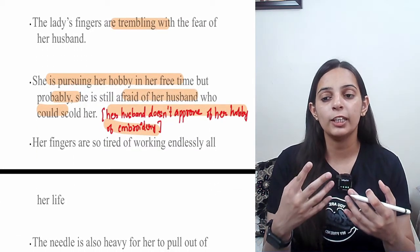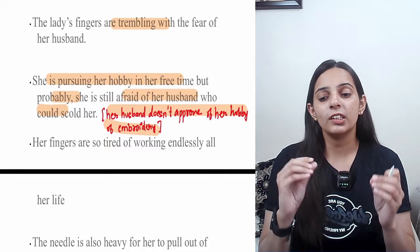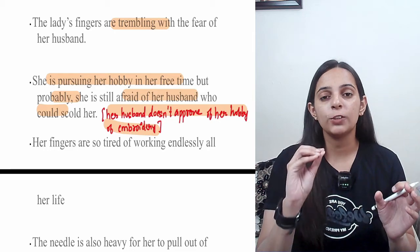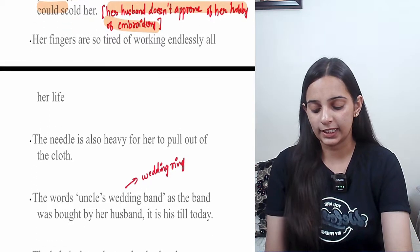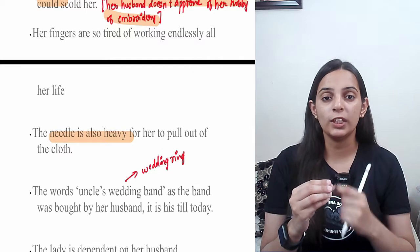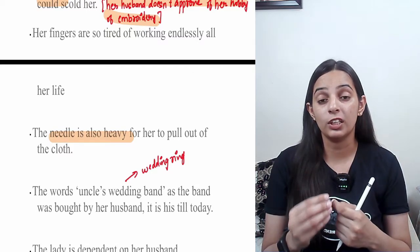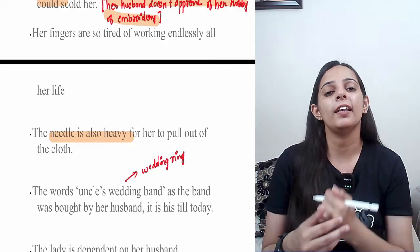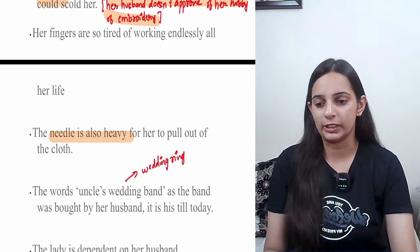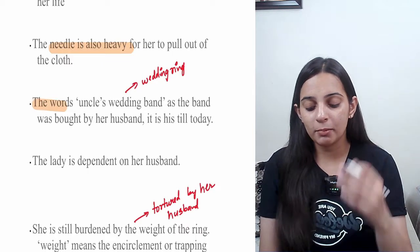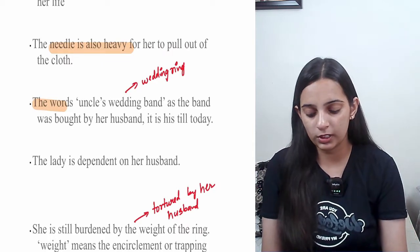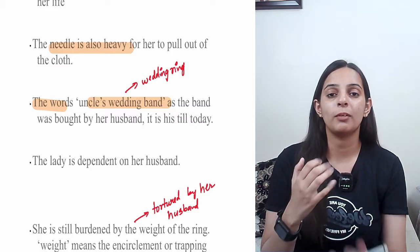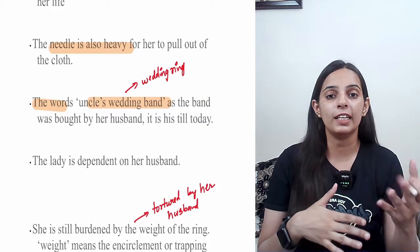Her fingers are very tired. She is so tired that she can't even pull the needle through the cloth. In this stanza there is a phrase, 'Uncle's Wedding Band.' The wedding ring that uncle gave her auntie — this represents that the lady is dependent on her husband.